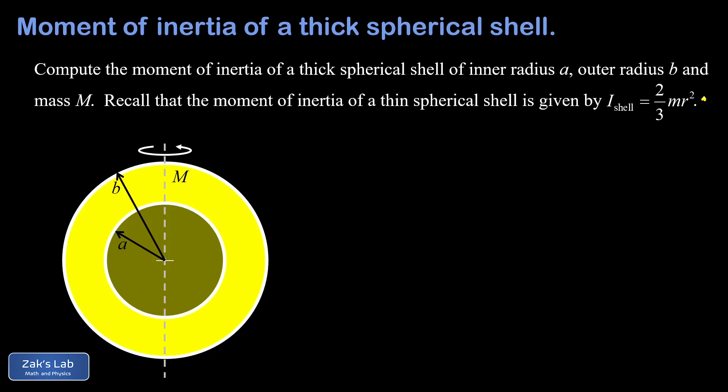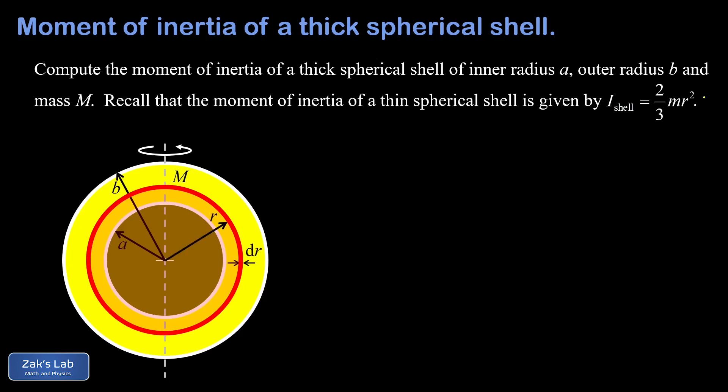The idea is to break this thick spherical shell into thin spherical shells between a and b. There's a representative thin spherical shell with an infinitesimal wall thickness and a variable radius as we go from a to b. We call the radius of our thin spherical shell little r, the thickness dr, and the mass of the thin shell dm. The overall strategy is to write down the moment of inertia of this thin spherical shell and then add up the contributions from all shells needed to build the thick spherical shell from a to b.